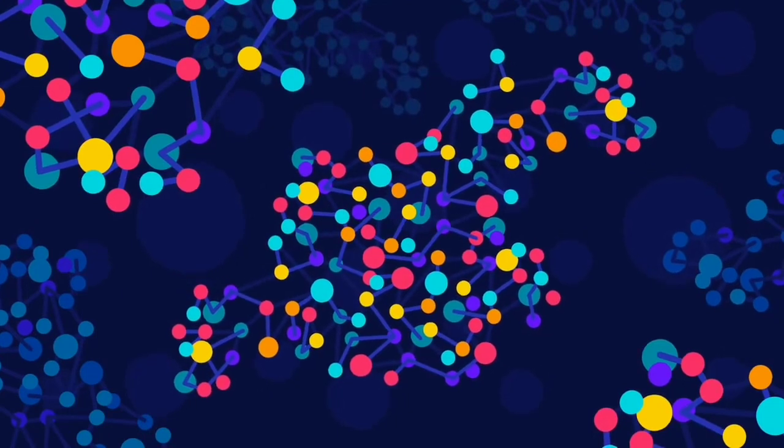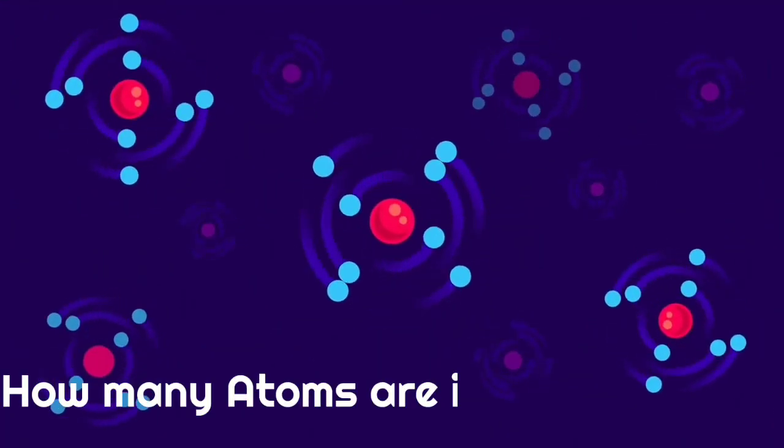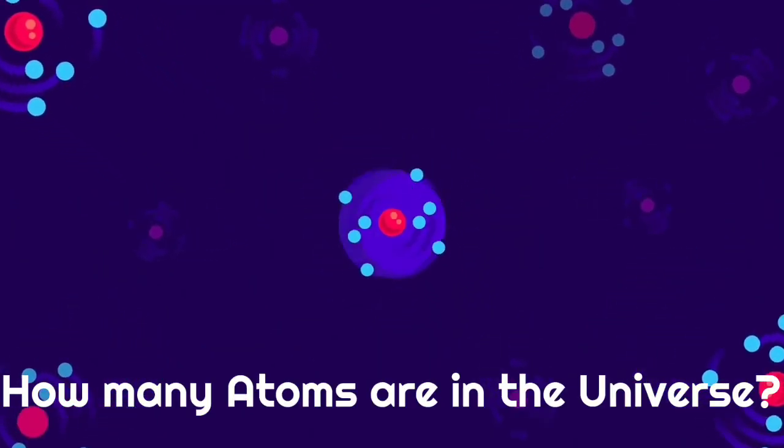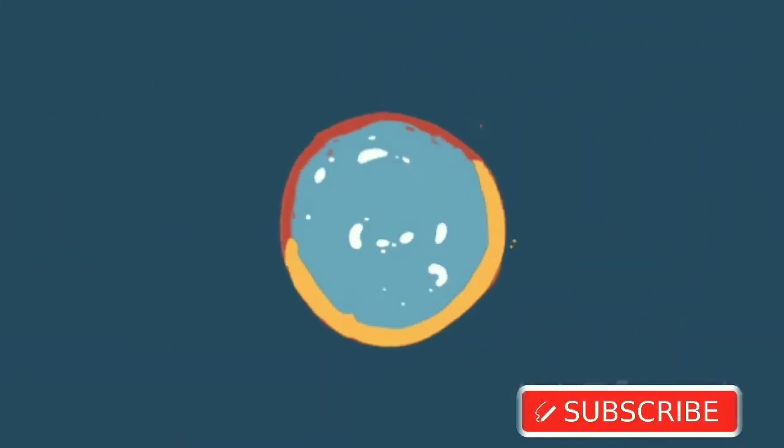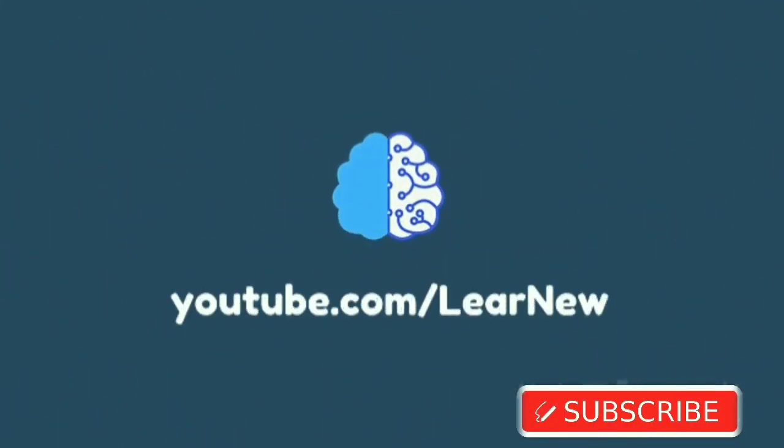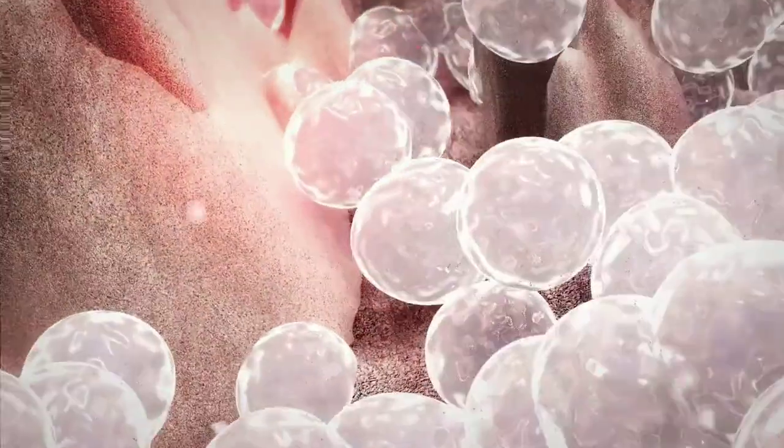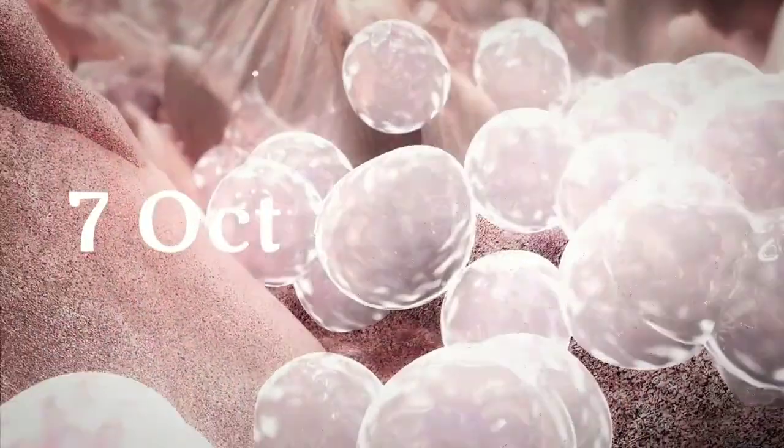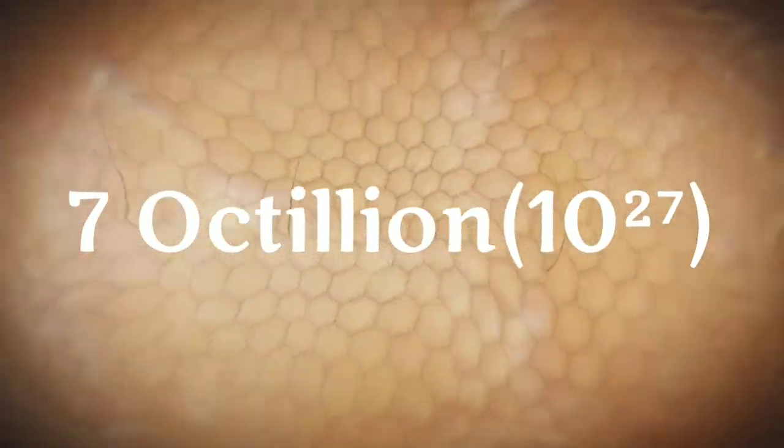If everything in the universe is made up of atoms, do we know how many atoms are in the universe? To start out small, there are around 7 octillion, or 7 followed by 27 zeros, atoms in an average human body according to The Guardian.